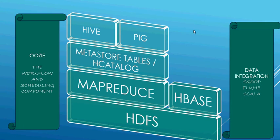Then we have the data integration area, which includes multiple tools — to name a few: Sqoop, Flume, Scala, and Spark. Spark is an analytical tool. There are a lot of tools surrounding the HDFS and Hadoop ecosystem, but I just wanted to keep it to the bare minimum.